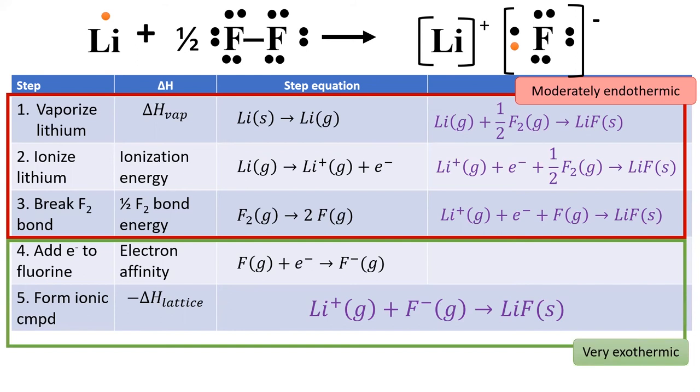The last two steps are very exothermic and usually more than enough to make up for the endothermicity of the first three steps. Thus, formation of an ionic compound is a favorable exothermic process.